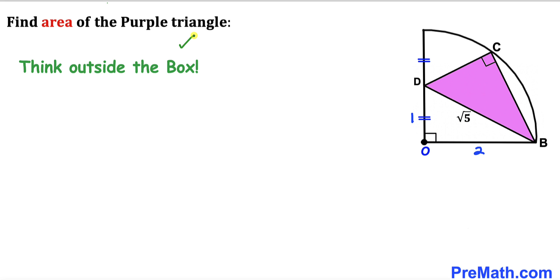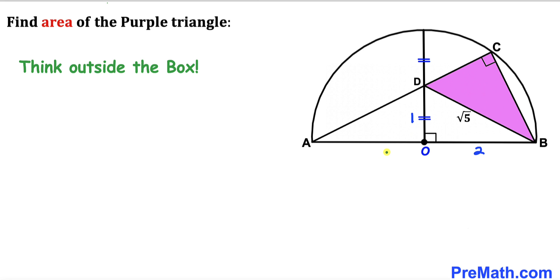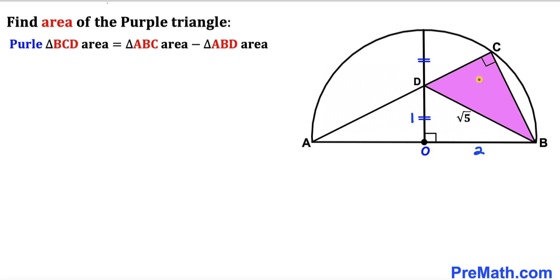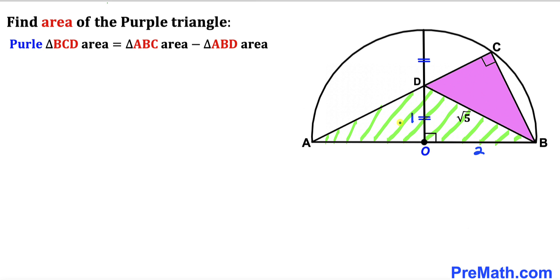Now we're going to think outside the box and consider a semicircle. Recall Thales' theorem: if A, B, and C are distinct points on a circle where angle ACB is a right angle, then line AB is the diameter. So if we extend line CD to point A, then AB becomes the diameter of this semicircle. The area of purple triangle BCD equals the area of big right triangle ABC minus the area of triangle ABD.